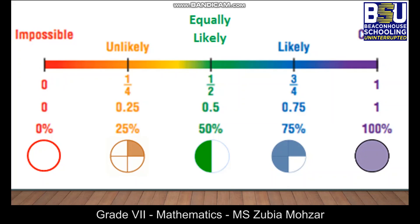A likely event would be written as 3/4 in fraction form, 0.75 in decimal form, or 75 percent. And a certain event is the event which has a 100 percent chance to occur.